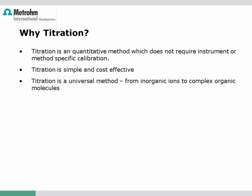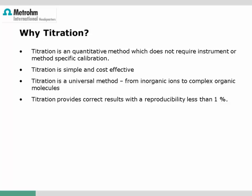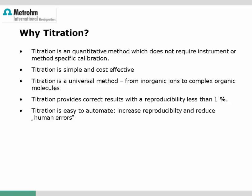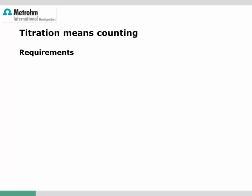Titration is also a very universal method. A titrator can be equipped for the determination of various species, from inorganic ions to complex molecules. Reproducibility is usually below 1%, but in many applications even less than 0.3% can be achieved. The performance of the titration system can be further enhanced when automation for liquid handling or sample preparation steps is used.